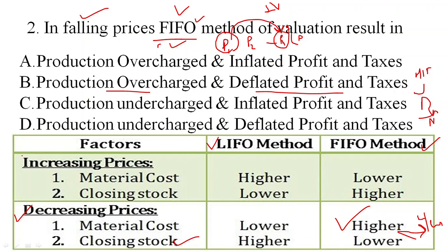This is a similar situation to when market prices are increasing and you have opted for the LIFO method — last in, first out. However, for FIFO method under increasing prices and LIFO method under decreasing prices, you will have inflated profit, more profit, higher closing stock, lower material cost, and production being undercharged. So these are four different situations of FIFO and LIFO under rising and falling prices.